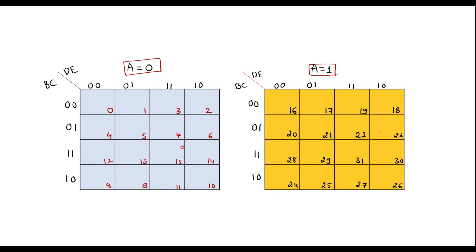Here I have drawn two KMAPs. This KMAP is for A equal to 0 and this KMAP is for A equal to 1, because in a 5-variable KMAP we must use two 4-variable KMAPs like this. The remaining variables are B, C, and D. Now let me enter the values.